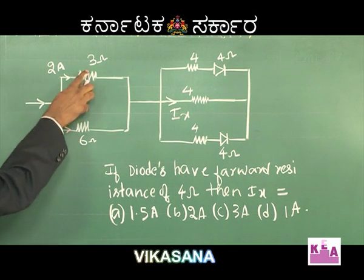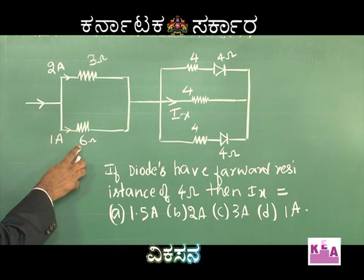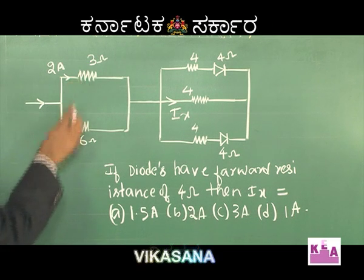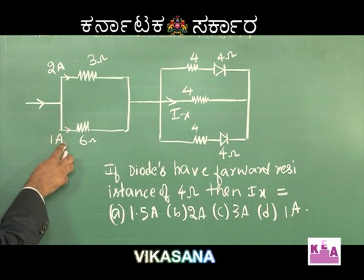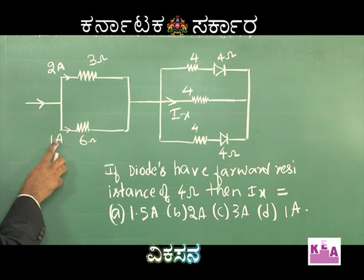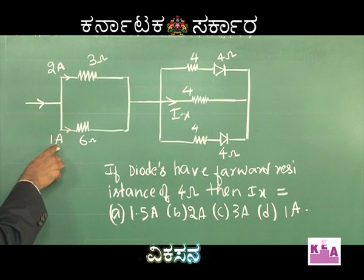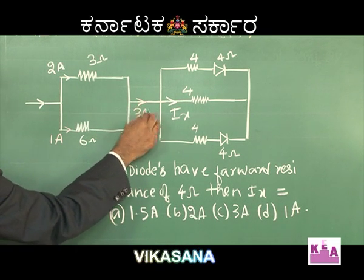The resistance ratio is 1:2, so the current ratio should be 2:1. This is 3 ohm at 2 ampere; therefore, the 6 ohm branch must carry 1 ampere. Now, if this is 2 ampere and this is 1 ampere, the sum of the currents must be equal to 3 ampere.